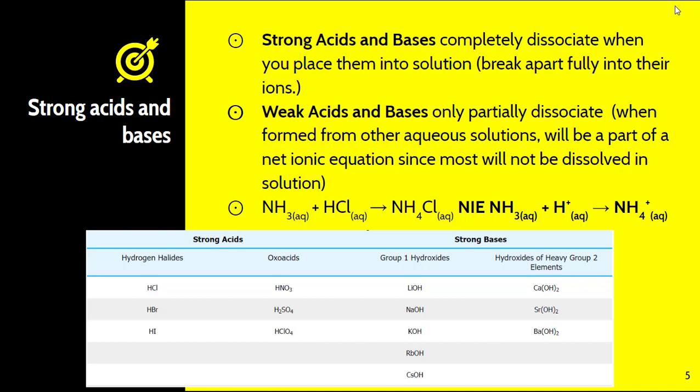We have six strong acids: HCl, HBr, HI, HNO3, H2SO4, and HClO4. Very important to make sure that you memorize those.